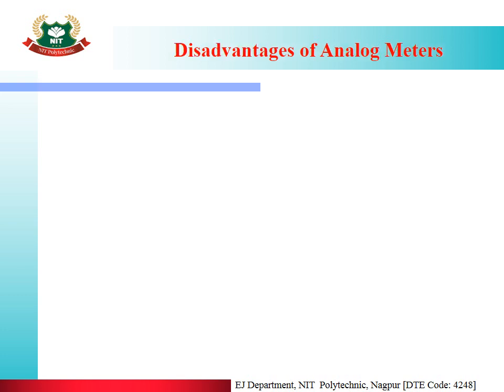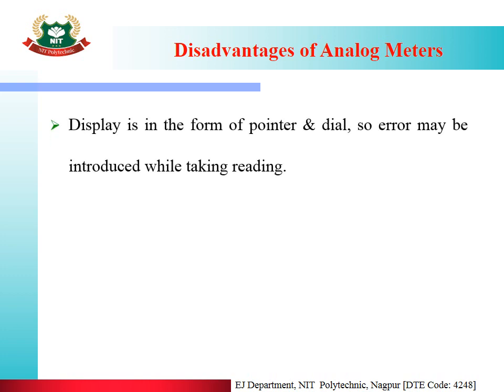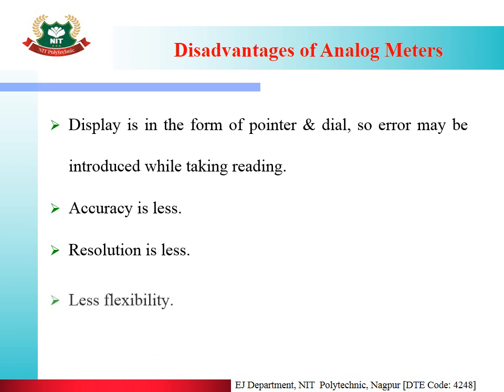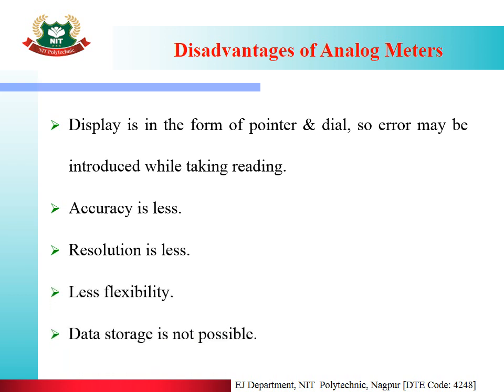Disadvantages of analog meters: The display is in the form of a pointer and dial, so error may be introduced while taking a reading. Accuracy is less. There is less flexibility and data storage is not possible. These are the disadvantages of analog meters.